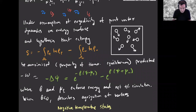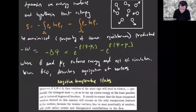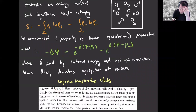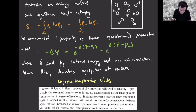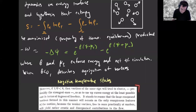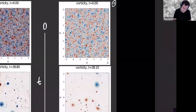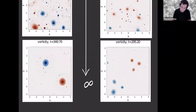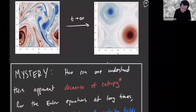Onsager writes: if β is negative, then vortices of the same sign tend to cluster, preferably the strongest ones, so as to use up the excess energy at the least possible cost in terms of degrees of freedom. The large compound vortices that form in this manner will remain the only conspicuous features of the motion, because weaker vortices are free to roam practically at random. It's remarkable that before looking at any simulations, Onsager gets it kind of spot on — if you look at those videos, it's exactly how you would describe in words what's happening.